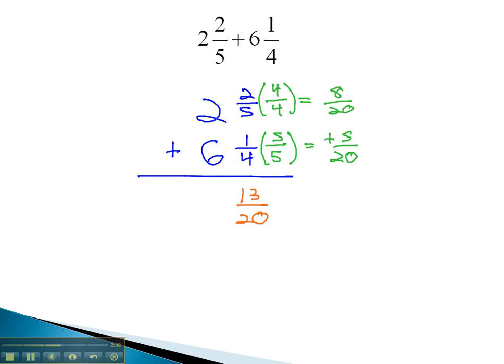And then finally, adding the whole numbers, 2 plus 6 is 8. This fraction does not reduce, and so we have our final solution, 8 and 13 twentieths.